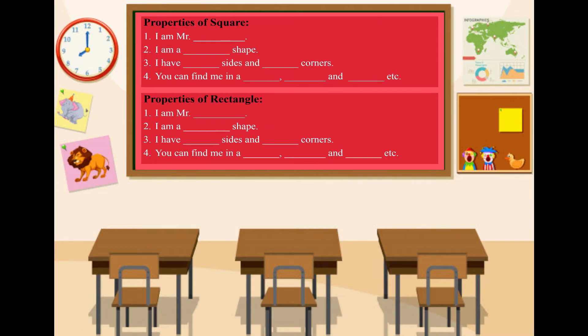It's time to do an activity. We will continue the same activity which we have done yesterday. We will write the properties of 2D shapes in our maths copies.